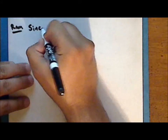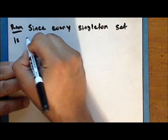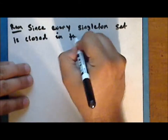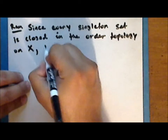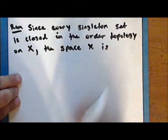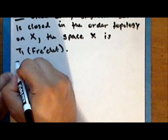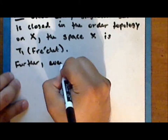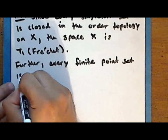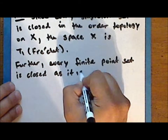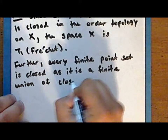Since every singleton set is closed in the order topology on the underlying set X, the space X is T1, or Fréchet. Further, every finite point set is closed, as it is a finite union of closed singleton sets.